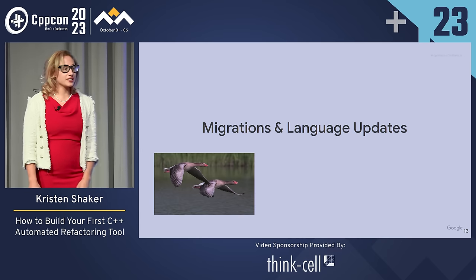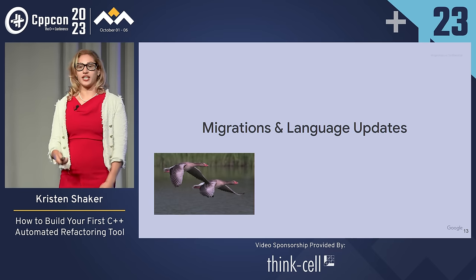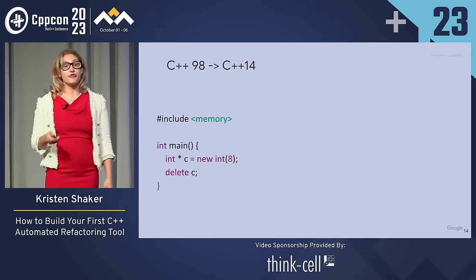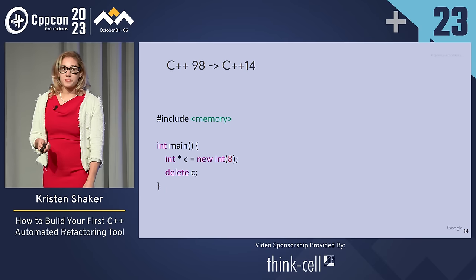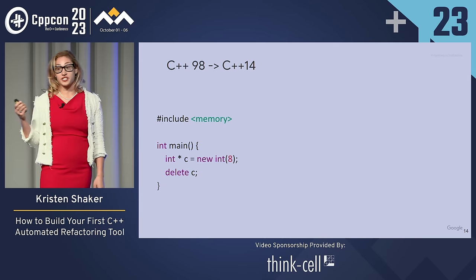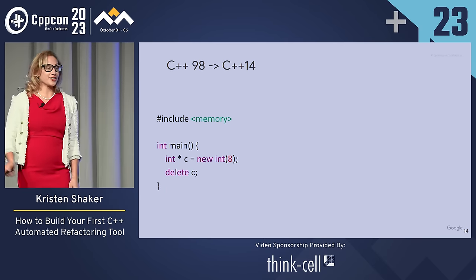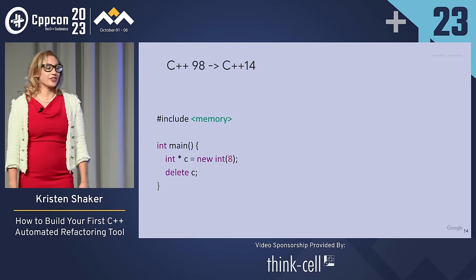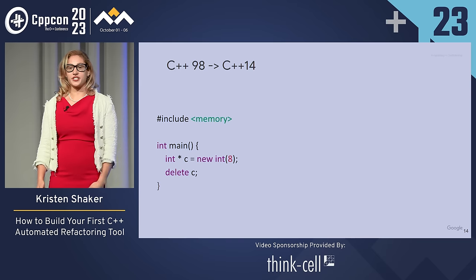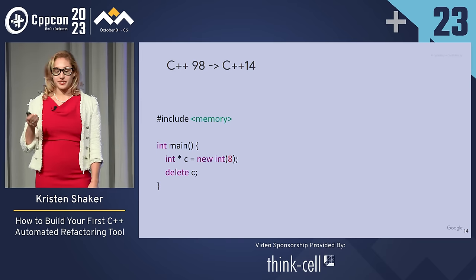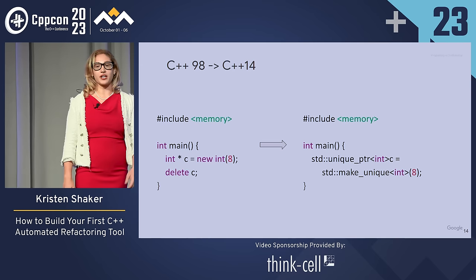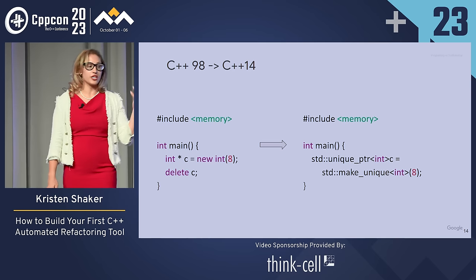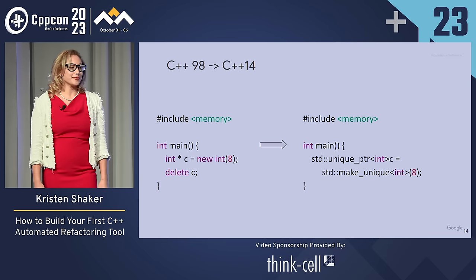Another use case is migrations and language updates. You might want to take advantage of better paradigms available in new versions of the standard. Here we have some bad code on the left with raw pointers and naked calls to new and delete, and we can use refactoring tools to take advantage of std::unique_ptr and std::make_unique.